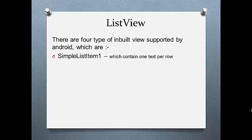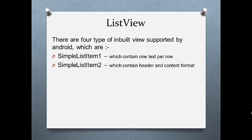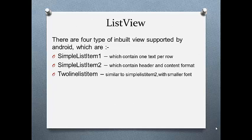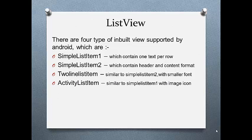There are four types of built-in views supported by Android. The first is simple_list_item_1, which contains only one text per row. Second is simple_list_item_2, which contains a header and content format. Third is two_line_list_item, which is similar to list_item_2 but with a smaller font. The last one is activity_list_item, which is similar to simple_list_item_1 but with an image icon.